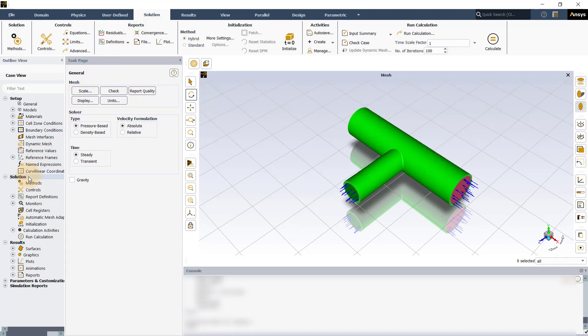By default, hybrid initialization is selected in Fluent, which is also generally recommended for all single phase steady state flows.